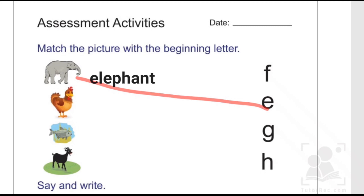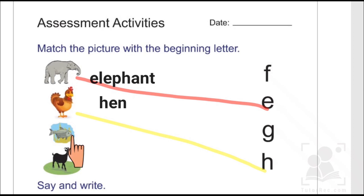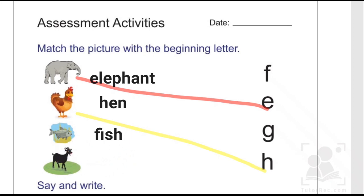The next picture is of a hen. The word 'hen' starts with letter H and it spells H-E-N, therefore we are going to match this picture with its respective letter H. The third picture is of a fish, and the word 'fish' spells F-I-S-H.